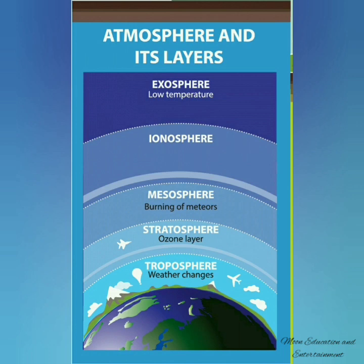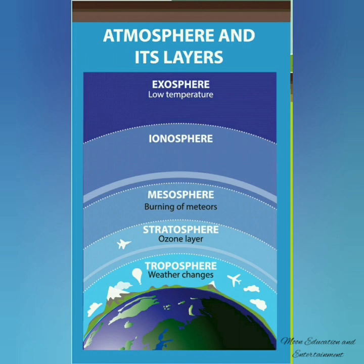The layers of the atmosphere. The atmosphere is made up of five different layers: the troposphere, the stratosphere, the mesosphere, the ionosphere, and the exosphere. The troposphere is the layer closest to the earth's surface, about 60 km above it, and is where weather changes occur. The stratosphere lies above the troposphere and contains the ozone layer, which protects all life on earth from harmful ultraviolet rays from the sun. The next layer is the mesosphere, where burning of meteors takes place. Above that are the ionosphere and exosphere, with the exosphere being the outermost layer with very low temperature air.